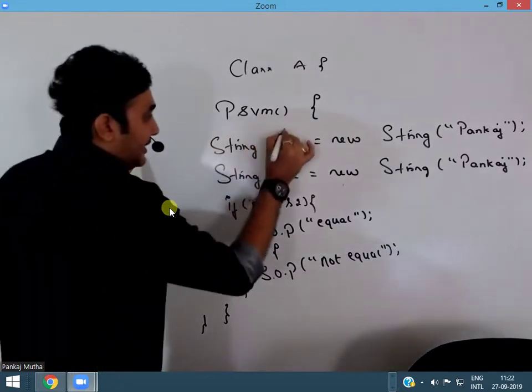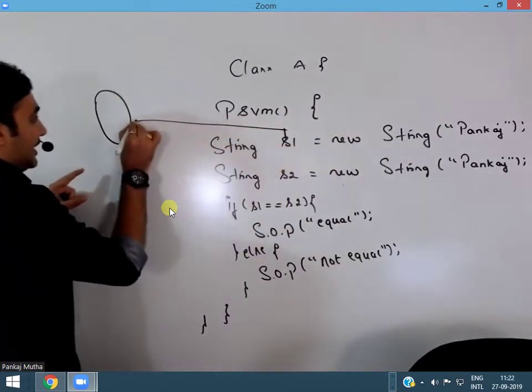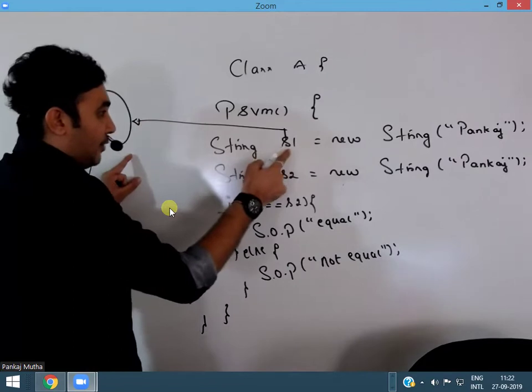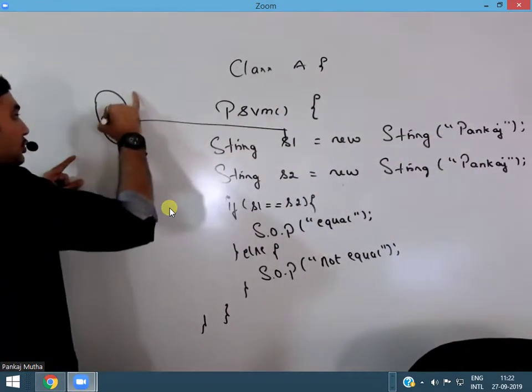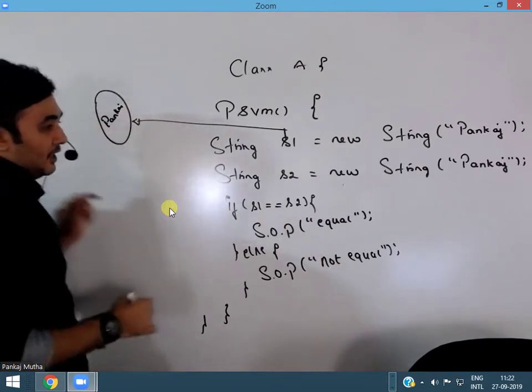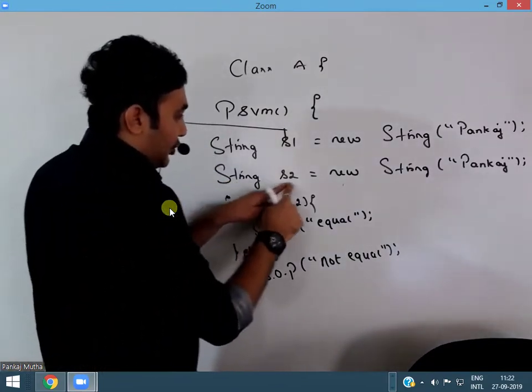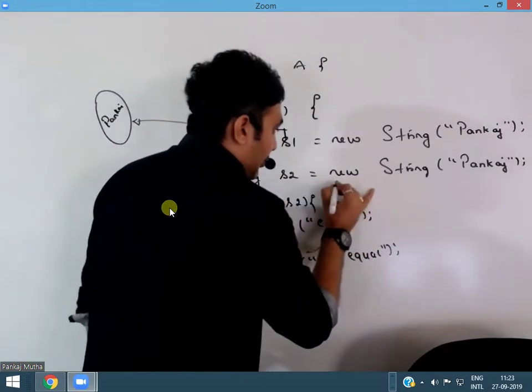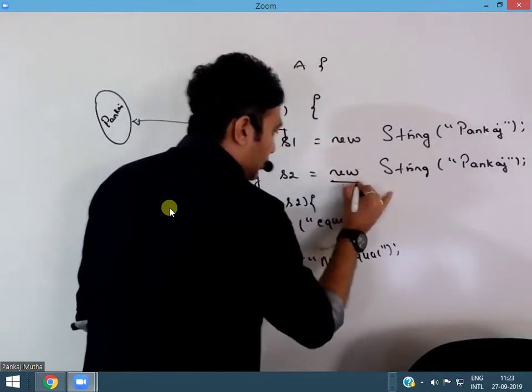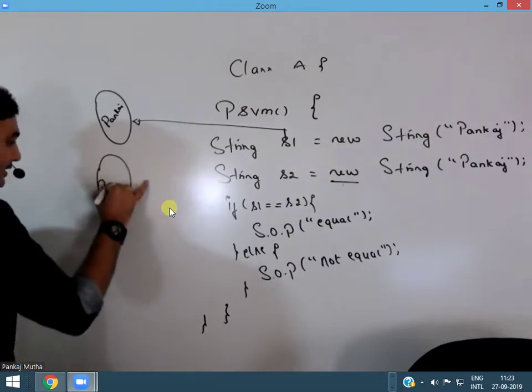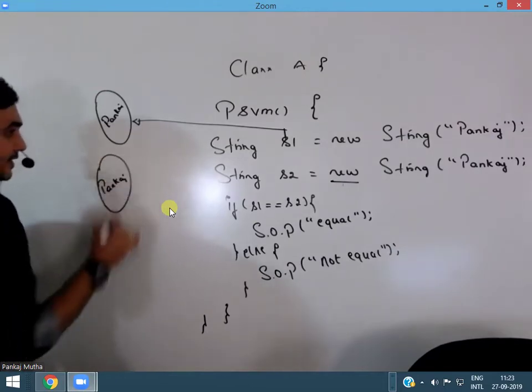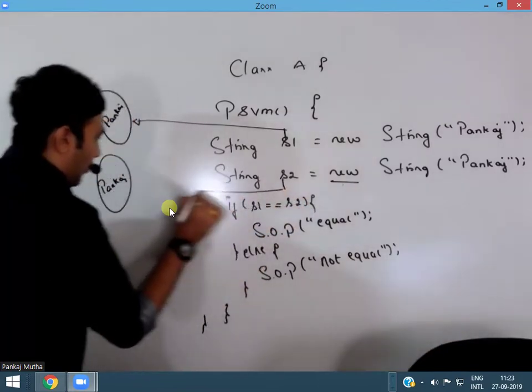That object is referenced by s1, s1 points to the object and in that what is stored is Pankaj. Again when I write string s2 equals new string, whenever I'm using the keyword new, an object is created, Pankaj is stored in it and s2 points to that.